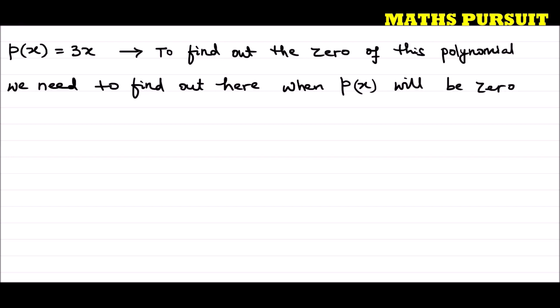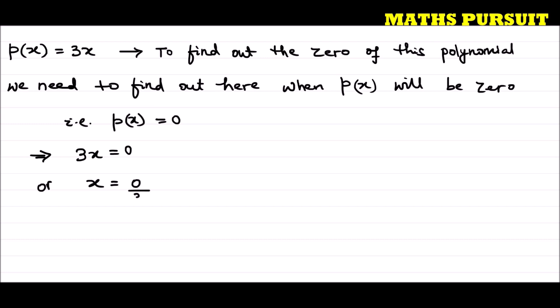So what does it mean when p(x) will be zero? That means p(x) is equal to 0. But here p(x) is equal to 3x, so we can write 3x is equal to 0. Then x is equal to 0 divided by 3 — I move the 3 from the left-hand side to the right-hand side, so it gets divided. We get x is equal to 0 by 3, or x is equal to 0.